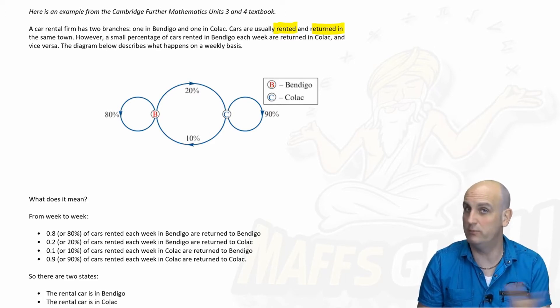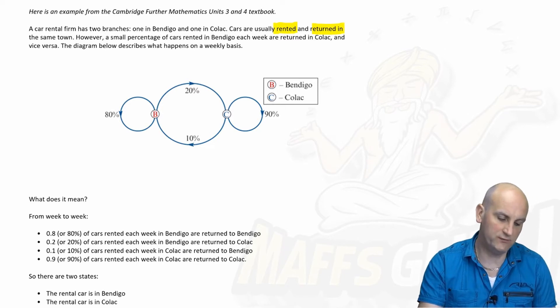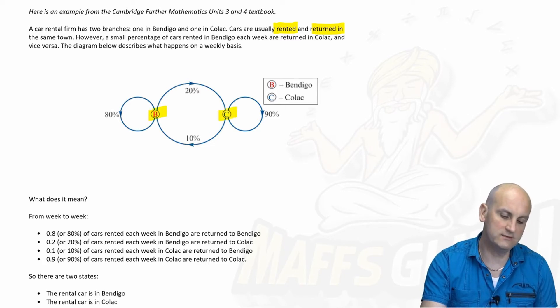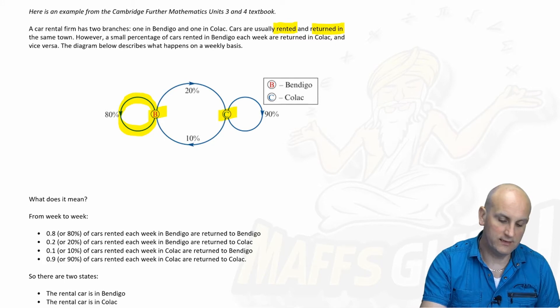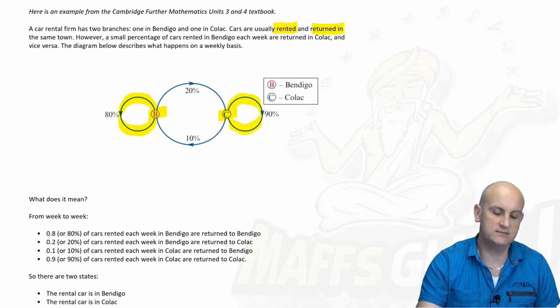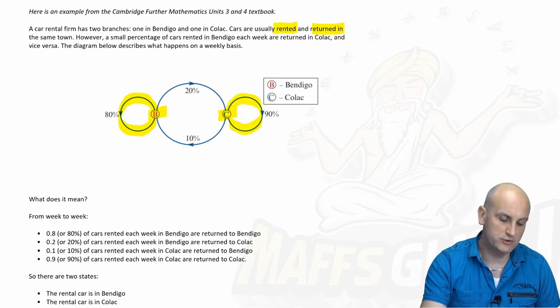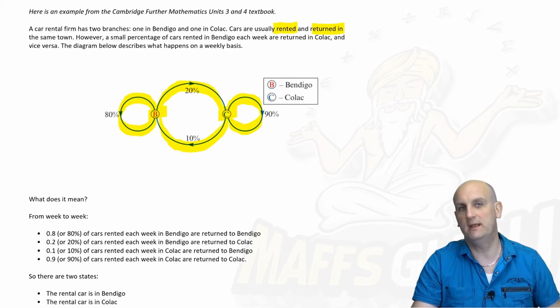So if we just try and decode what this diagram means, there is Bendigo and there is Colac. So this 80% loop tells me that 80% of cars that start in Bendigo finish in Bendigo. This one here tells me that 90% of cars that start in Colac end in Colac. 20% of cars which start in Bendigo finish in Colac and 10% of cars which start in Colac end up in Bendigo.